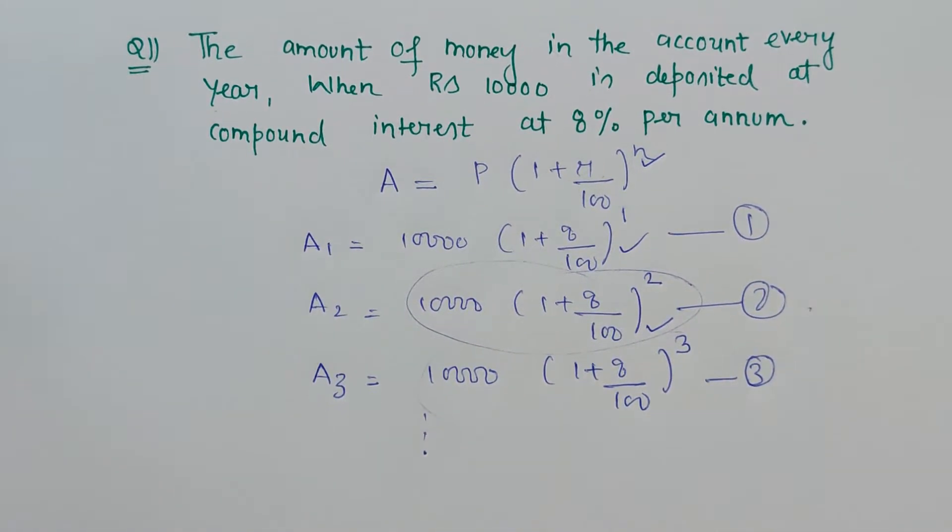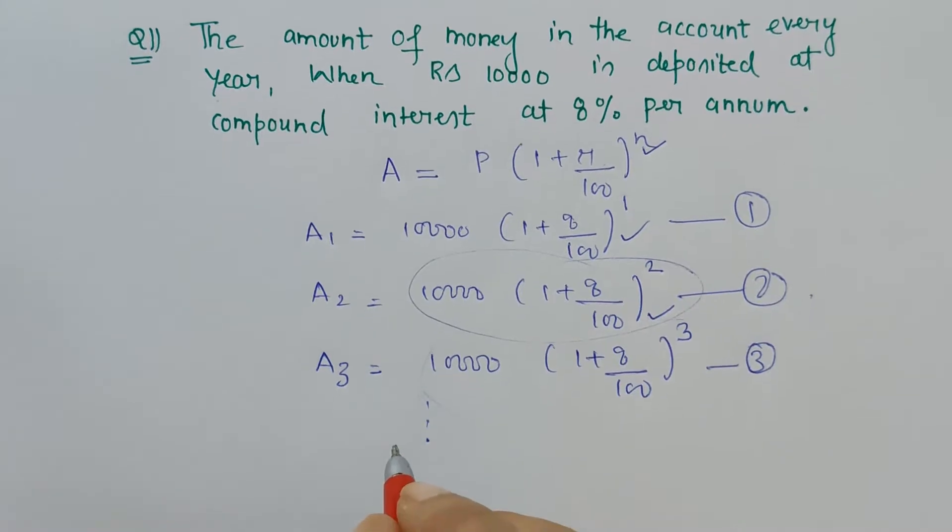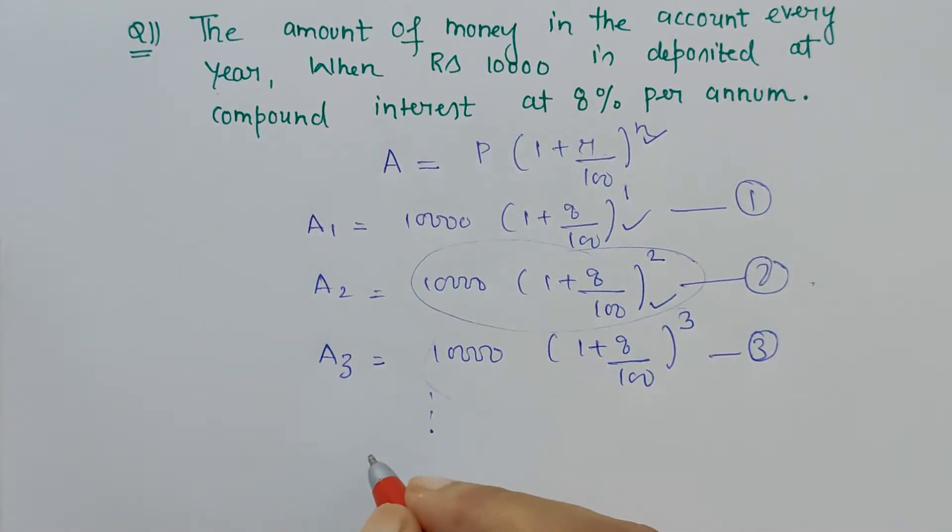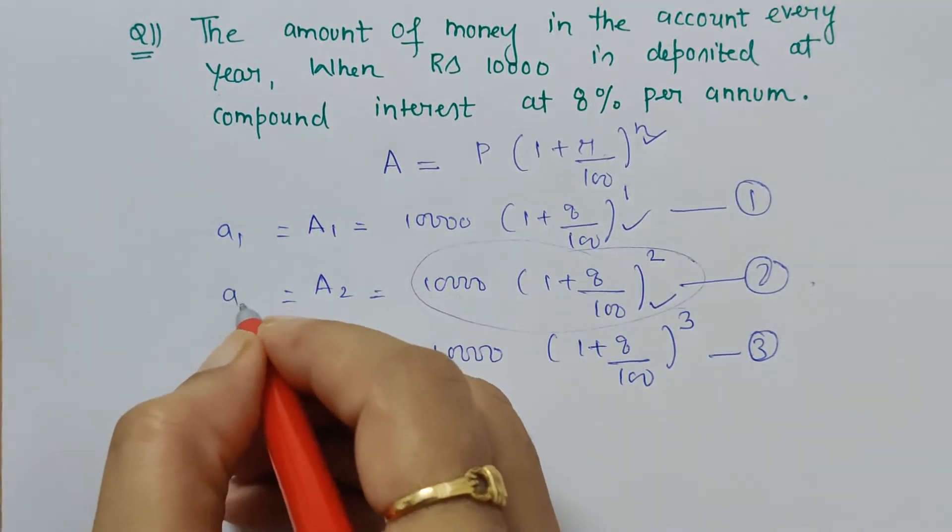And similarly, when you take third year amount minus second year amount, the value will not be the same. It is not having any common difference, so it does not form an AP. You want to get it clear by writing? So you can write—actually, how do we denote the terms?